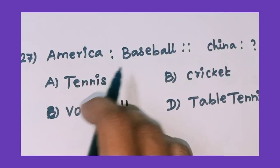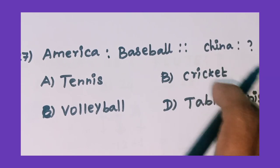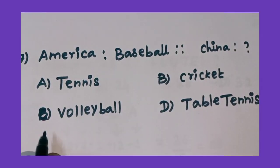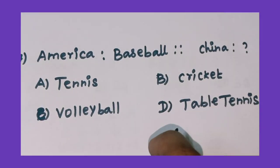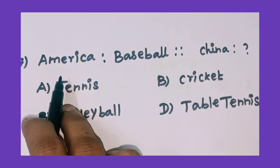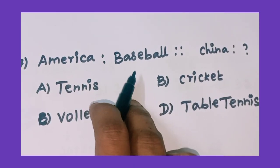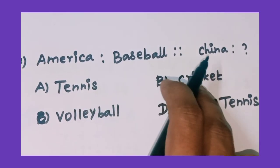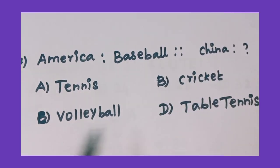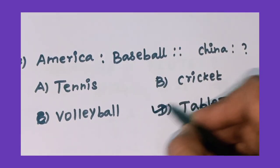America ratio baseball, proportion China ratio — question mark. Option A: tennis, option B: cricket, option C: volleyball, option D: table tennis. America's national game of sports is baseball, and China's national game of sports is option D: table tennis.